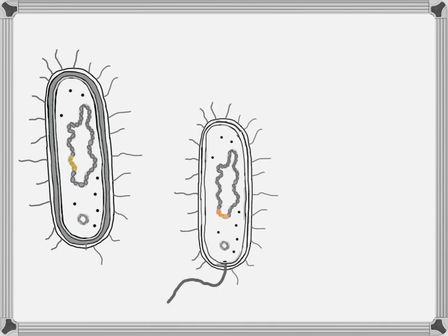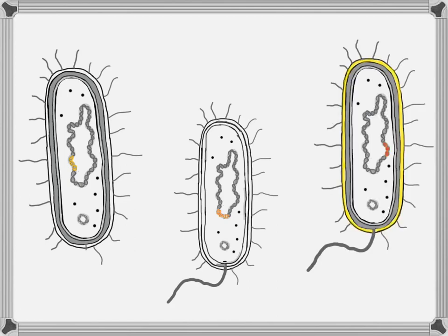We might have a bacteria that has a thinner-than-normal or non-existent cell wall — that wouldn't be good, that cell wall gives it structure and support as well as some protection. Or we might have a bacteria that has a thicker-than-usual cell wall or a different chemical in its bacterial capsule, that outermost layer.